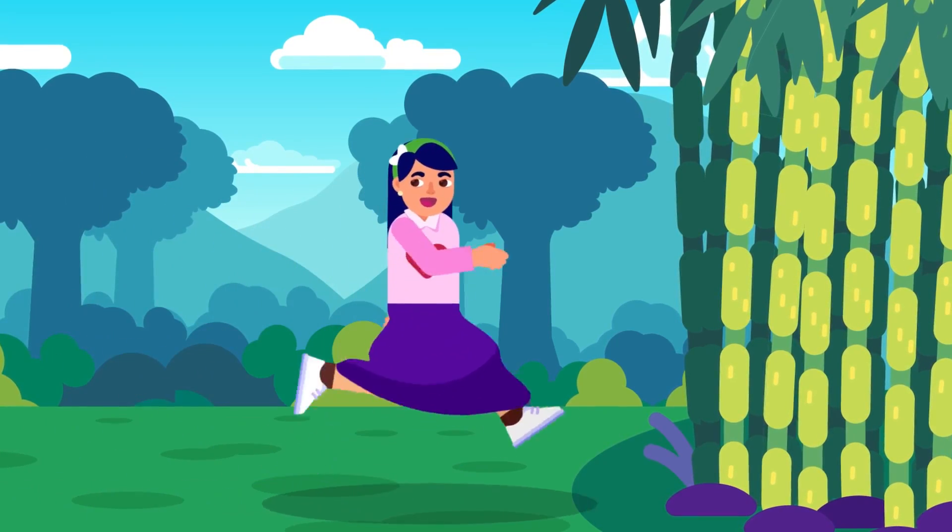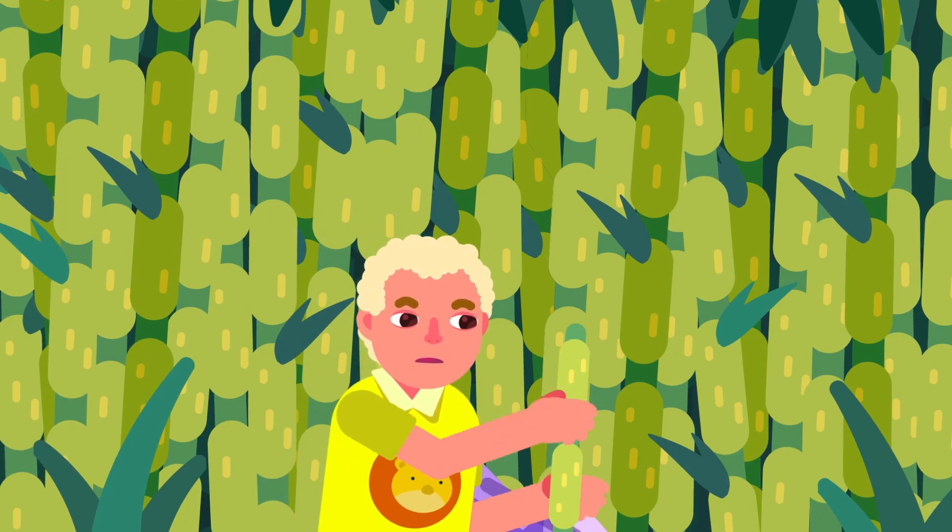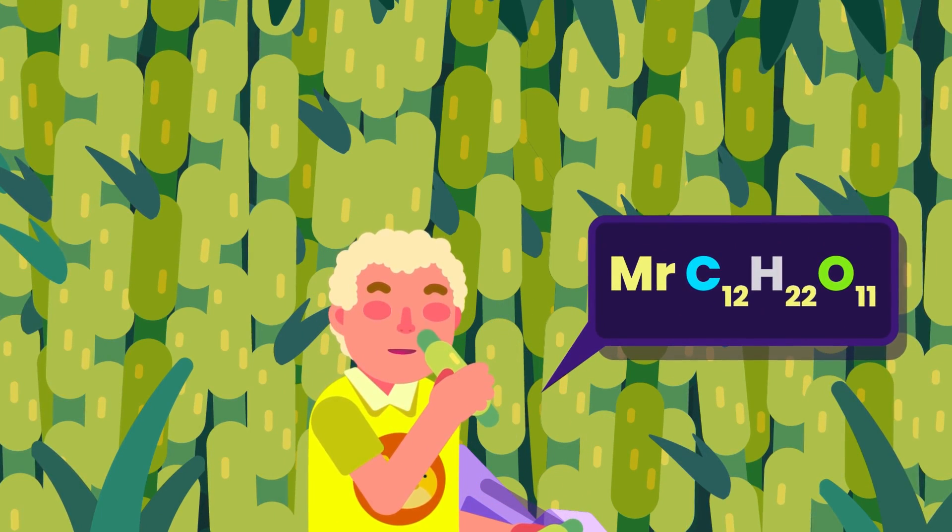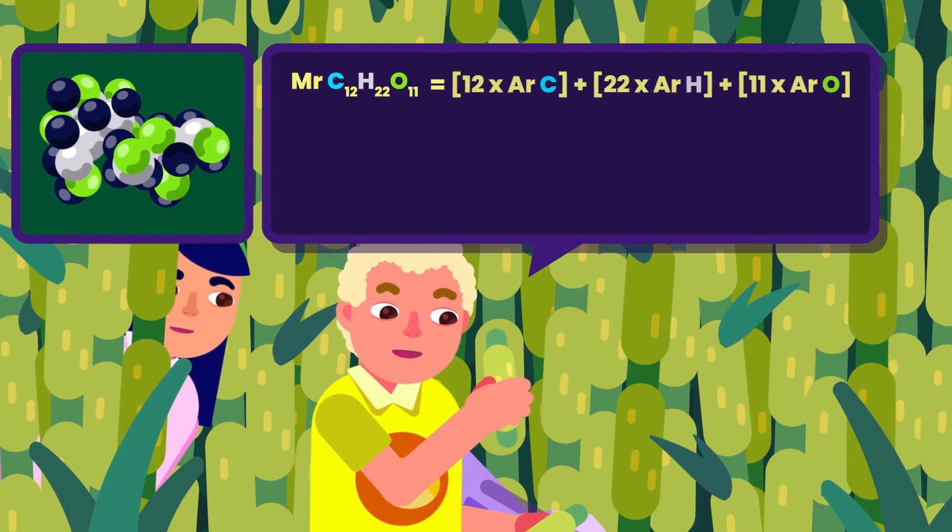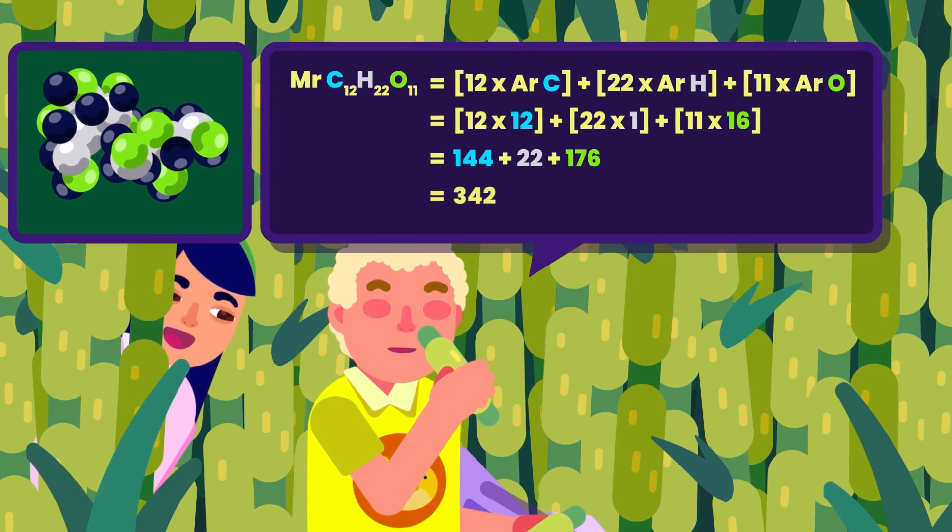Let's try to calculate the MR of sugar in sugarcane. First, we need to identify its elements. Then, we multiply the AR of each element by their number, and lastly, add them together.